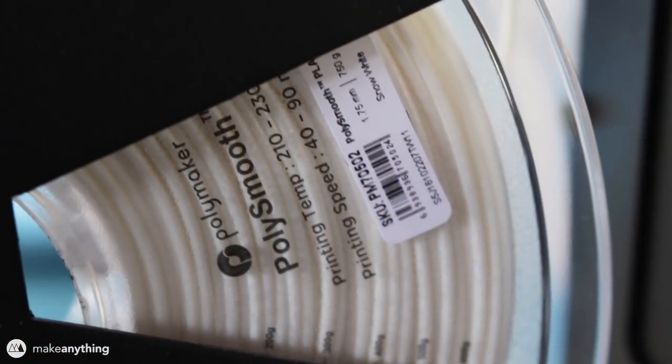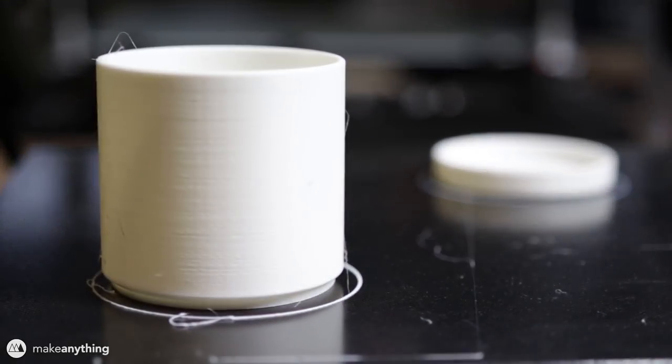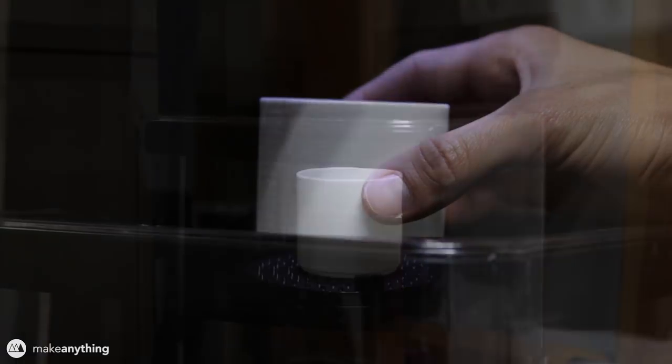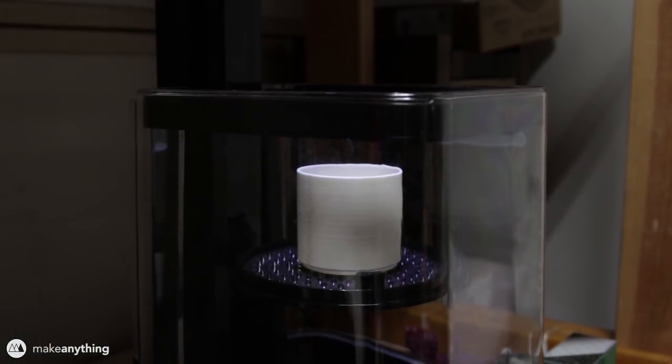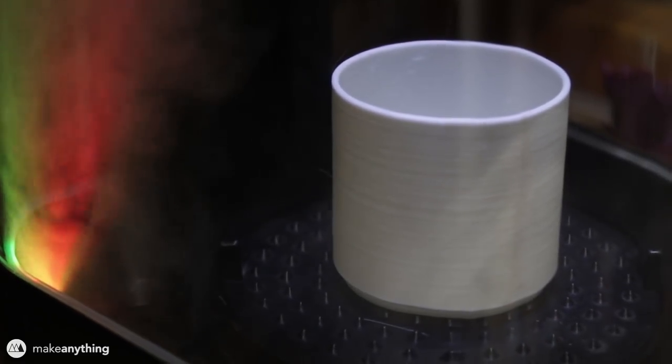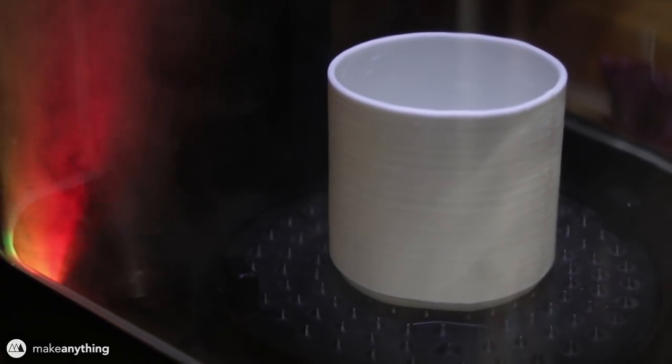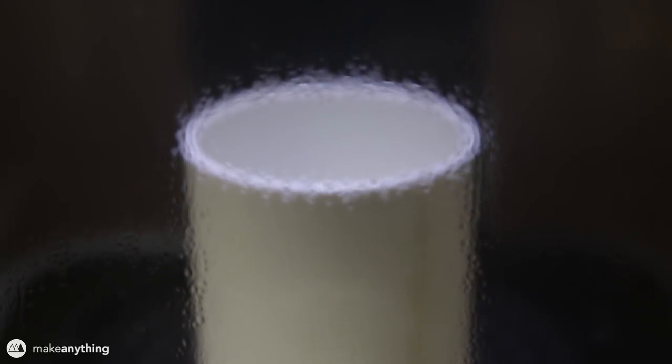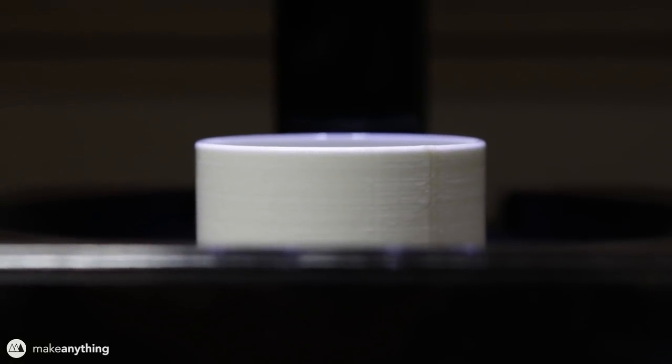But I actually printed this using Polymaker's PolySmooth filament and I smoothed that in the PolySher which is this machine that I don't know if I've shown on this channel yet but basically you use this special filament and then you've got this container you put some 99% isopropyl alcohol in it and the PolySher turns that into a mist and spins them all around and coats this evenly with that mist and it ends up smoothing out the whole part and it looks really cool especially for this purpose.